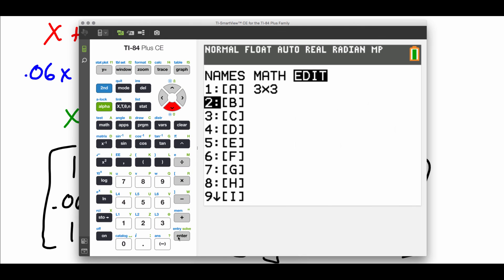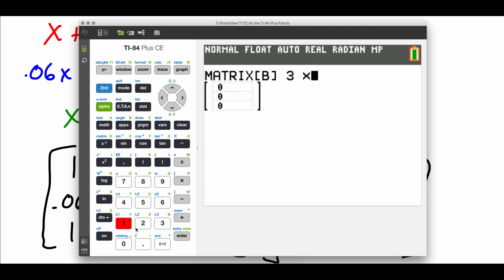Then we'll need to edit matrix B. So we'll arrow over there. Matrix B was a 3 by 1 matrix, and top row was 10,000. Then we had 730, and last row was 0.